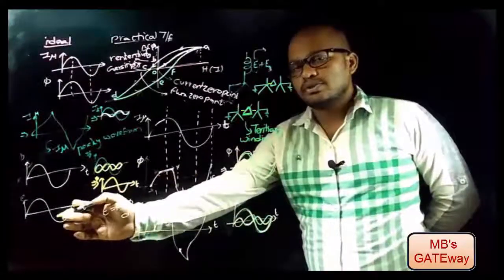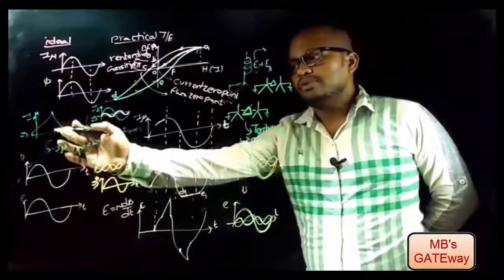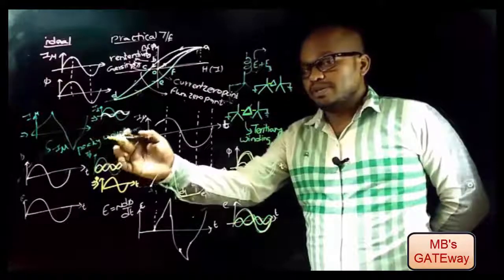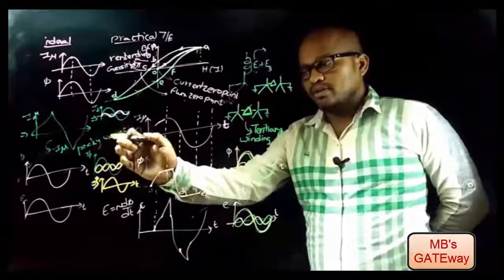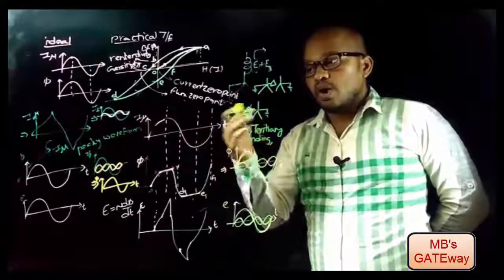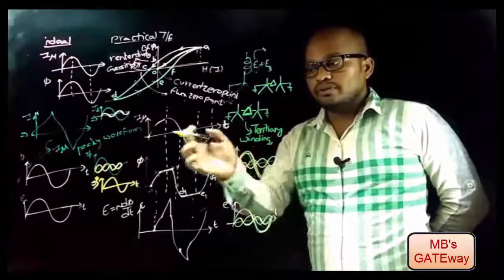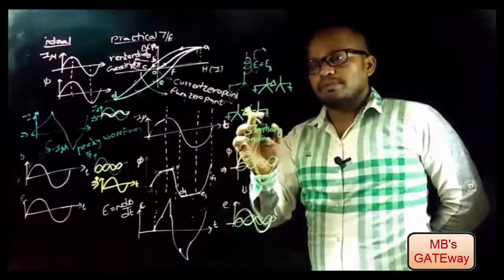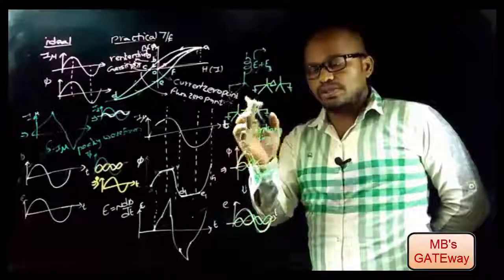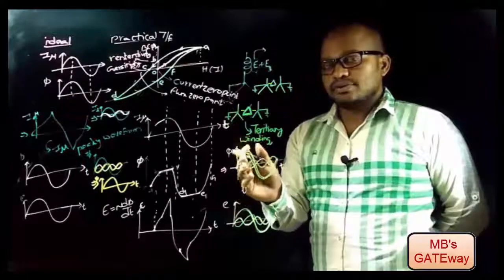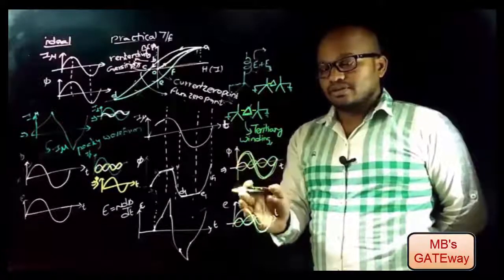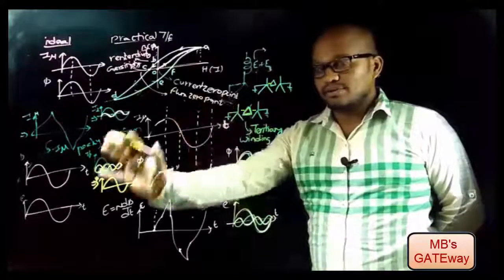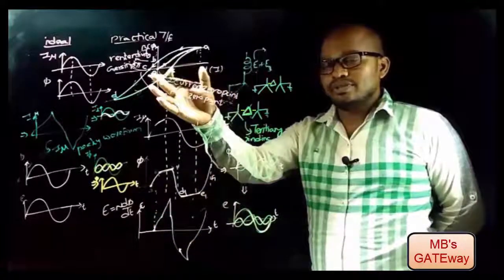In conclusion, to get sinusoidal output EMF we need to give a peaky waveform as input to the transformer, but this peaky waveform is very difficult to obtain. Therefore, we provide a path to the third-order harmonic — because of which sinusoidal flux is set up in the core — and that causes the sinusoidal output EMF. The BH characteristics are used to explain this concept, which is the importance of BH characteristics in transformers.